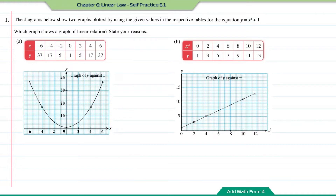For questions A and B, the graph has been plotted for you. For question A, this is the graph of y against x. And for question B, this is the graph of y against x squared. So for the same equations, if you are plotting using different variables — y and x versus y and x squared — it's going to give you a different shape of graph.